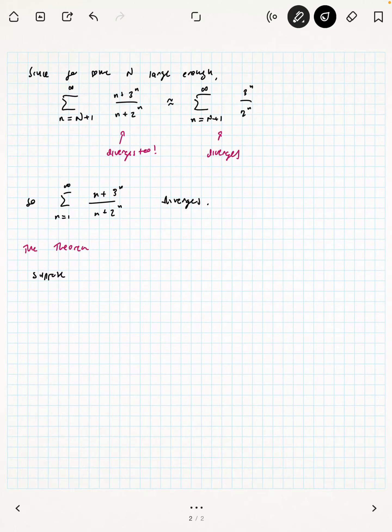The theorem that states the limit comparison test says we are going to suppose, again, that our series that we're comparing to each other have only positive terms. Then, if the limit as n approaches infinity of a sub n over b sub n, the fraction of the terms, if that limit equals c for c, a finite positive real number, then either both series converge or they both diverge.